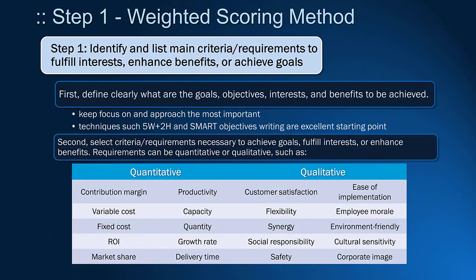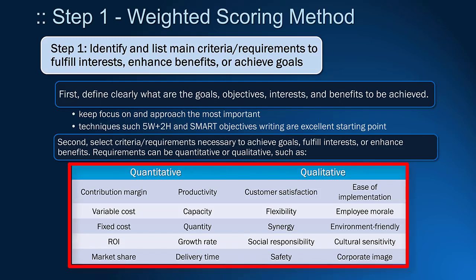In the first step, it is crucial to define clearly the goal, and then choose requirements or criteria that are important to achieve the objective. The requirements or criteria can be qualitative or quantitative. Here you can see some examples for business scenarios.